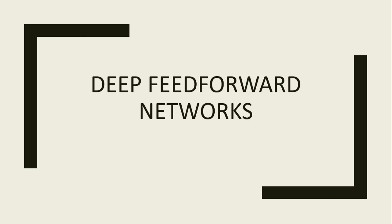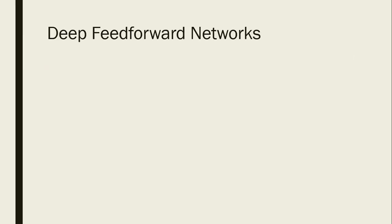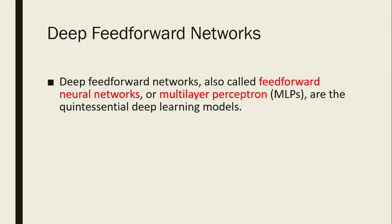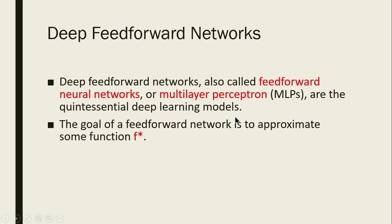Today we are going to see deep feedforward networks. Deep feedforward networks are also called feedforward neural networks or multi-layer perceptrons, MLPs. They are the quintessential deep learning model and the very essential thing in deep learning. We normally call them as neural networks. The basic component in this network is a perceptron, and there are multiple perceptrons in it, so we call it as multi-layer perceptron.